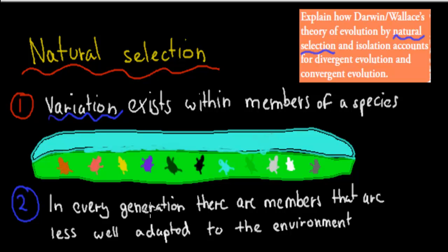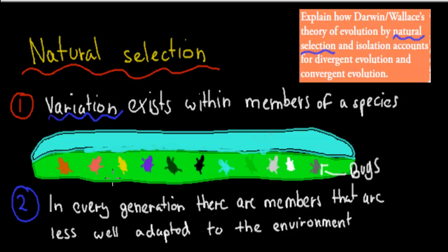The second point is: in every generation, there are members that are less well adapted to the environment — some have differences that are not good for surviving. Imagine bugs in a green environment that are all different colors: purple bugs, black bugs, green bugs, orange bugs, pink bugs, all living together peacefully with no real predator.